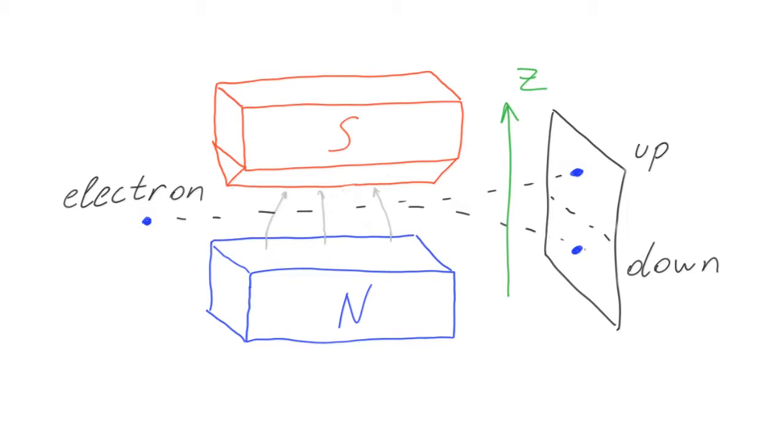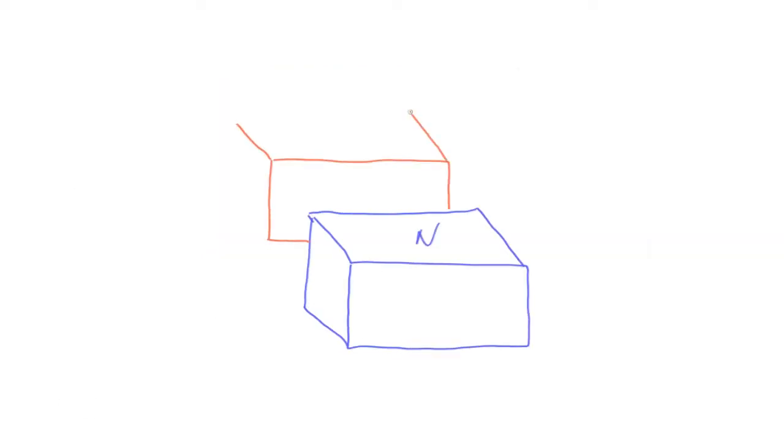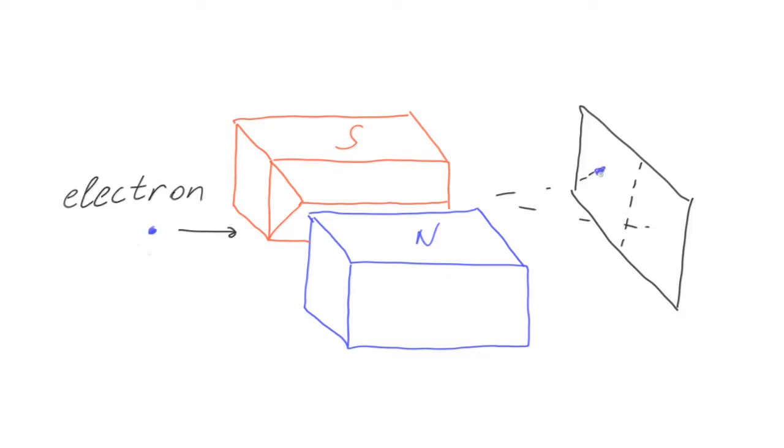If an electron were a spinning ball, then by rotating the magnets it would be possible to find such position when the rotation axis would be perpendicular to the field lines and the electron would hit the center of the screen. But this never happens. For any orientation of the magnet, an electron gets only to the top or bottom point. Its spin is always directed either up or down relative to any axis. That's why spin cannot be described by a classical vector pointing in the direction of rotation axis.